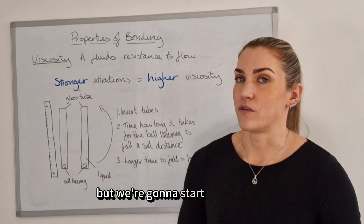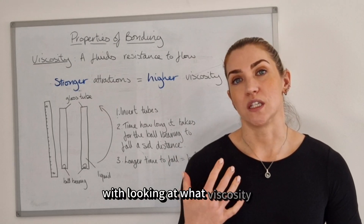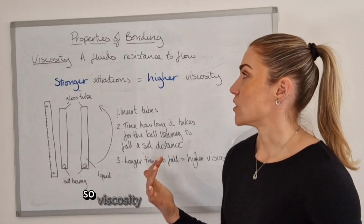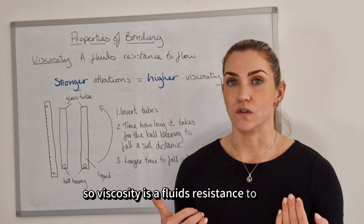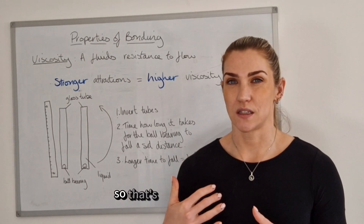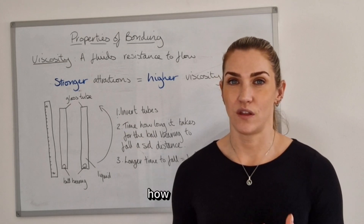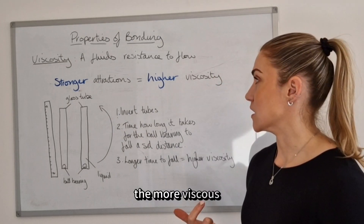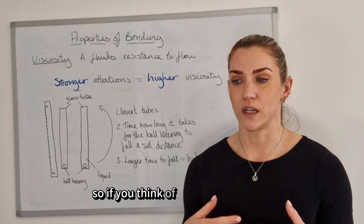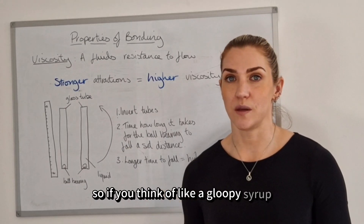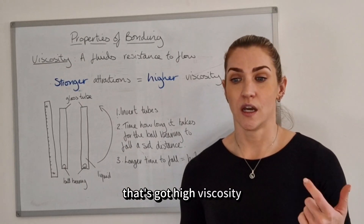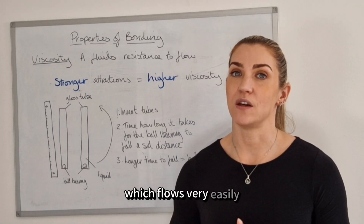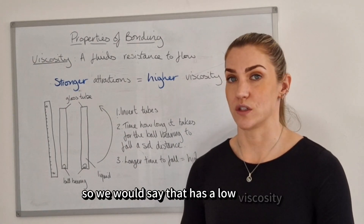We're going to start off by looking at what viscosity is and how you can test it in an experiment. Viscosity is a fluid's resistance to flow — in terms of liquids, how thick it is. The thicker it is, the more viscous it is. Think of a gloopy syrup, which has a high viscosity compared to water, which flows very easily and has a low viscosity.